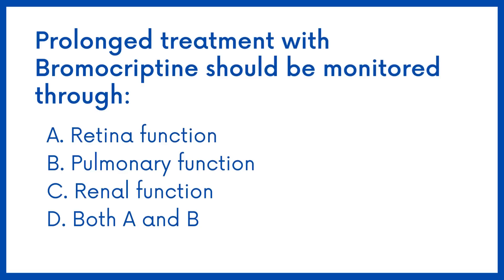Prolonged treatment with bromocriptine should be monitored through which option? Option A: Retina function. Option B: Pulmonary function. Option C: Renal function. Option D: Both A and B.